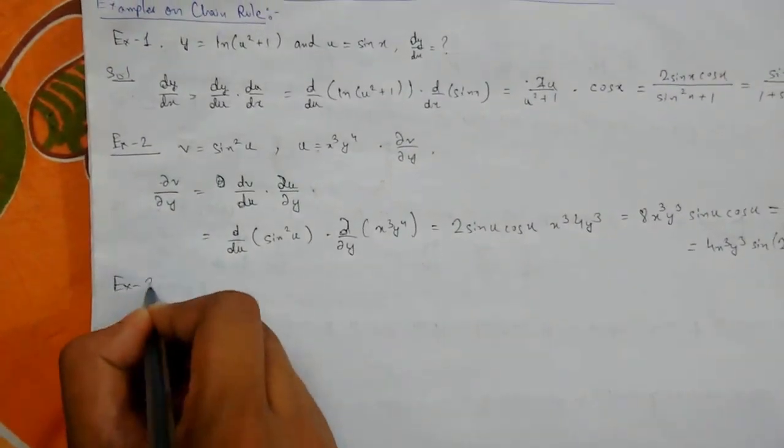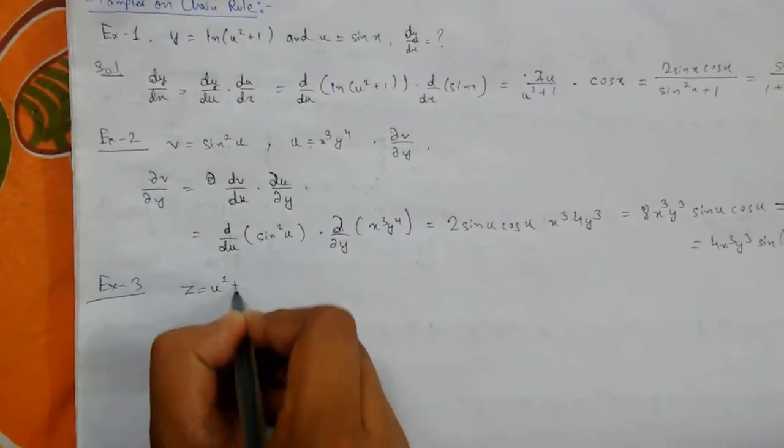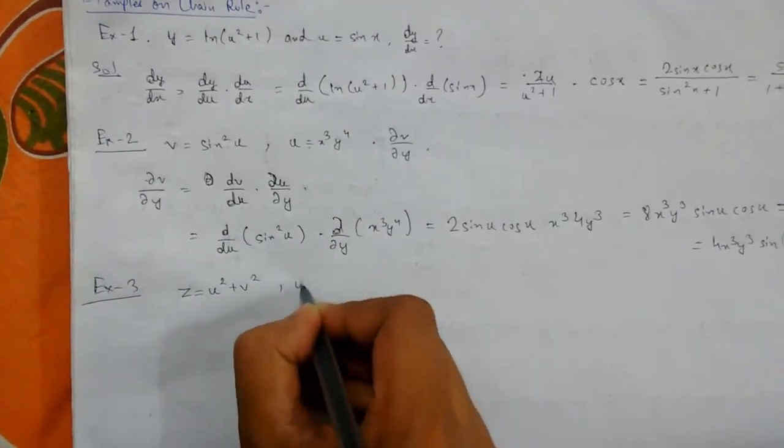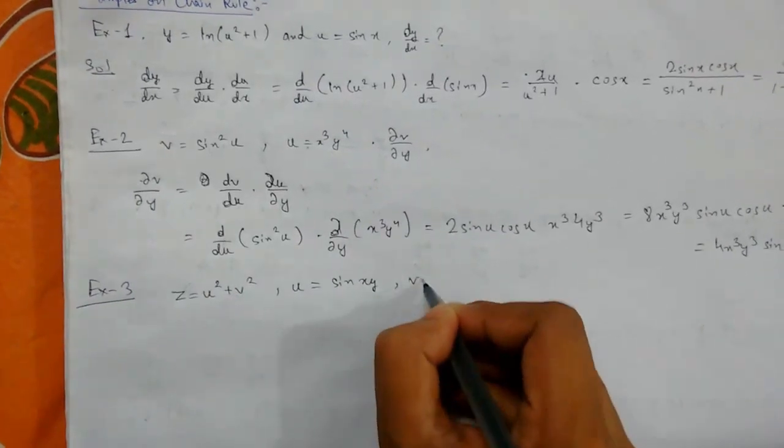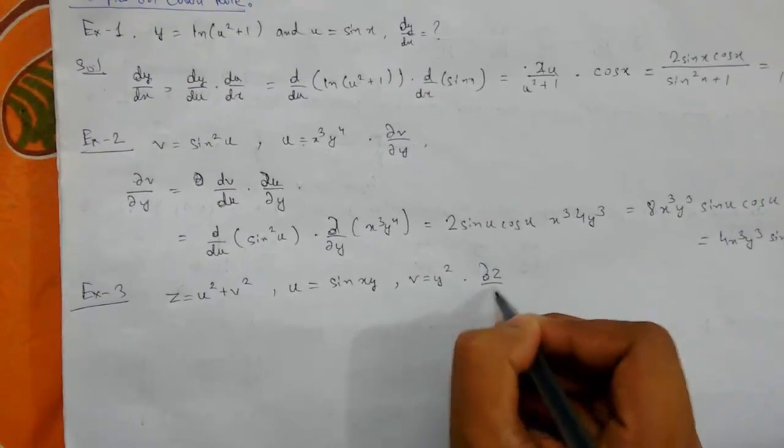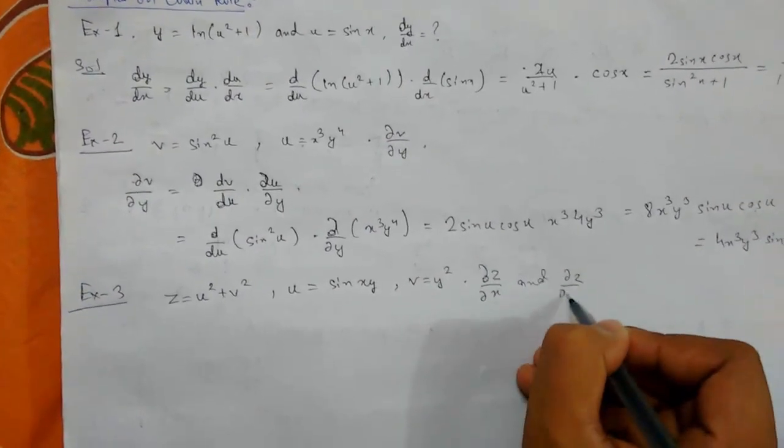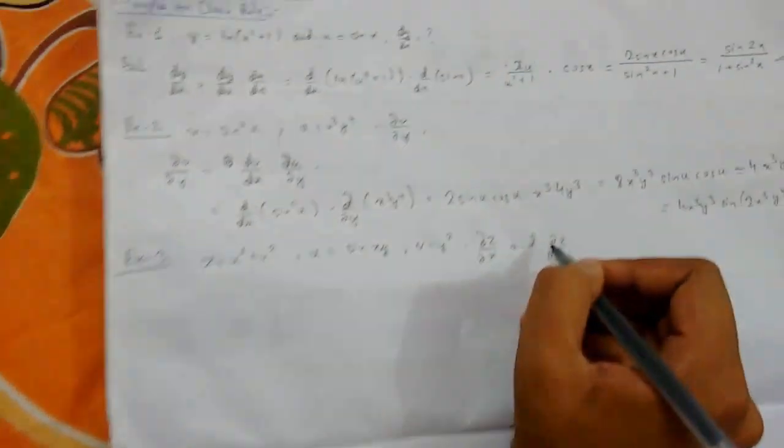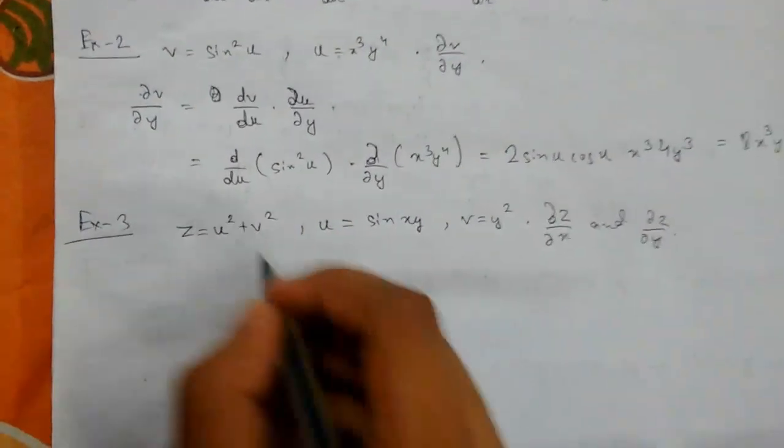Now let us move to our third example. Suppose we have z = u² + v² where u = sin(xy) and v = y². We need to find ∂z/∂x and ∂z/∂y. Here u and v are functions of both x and y.